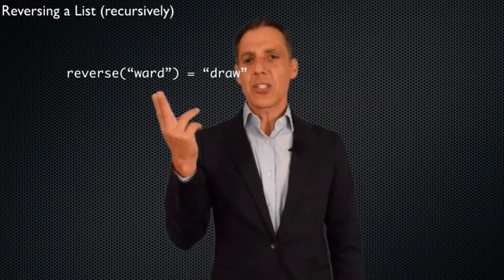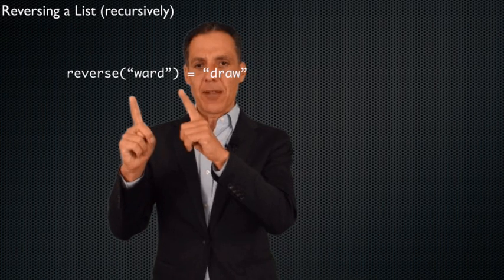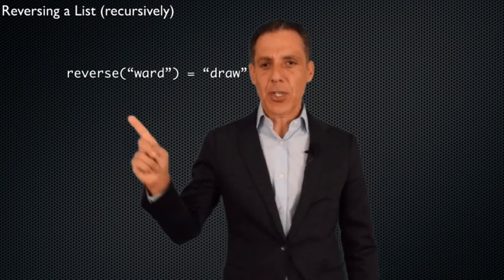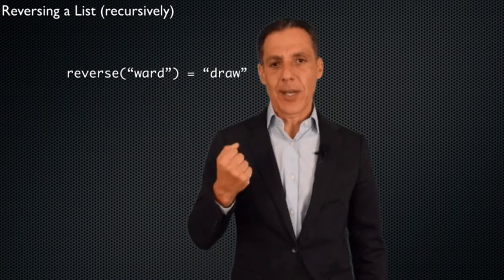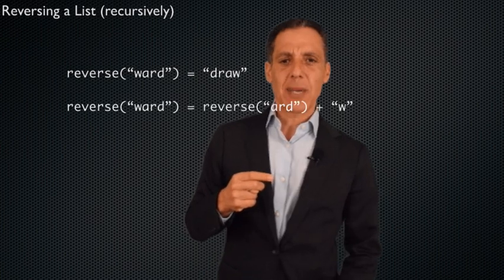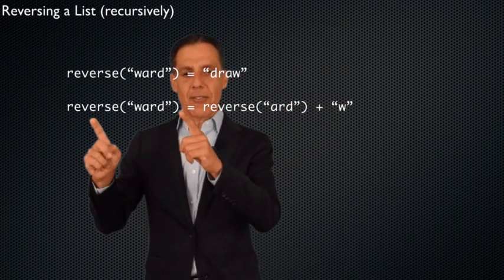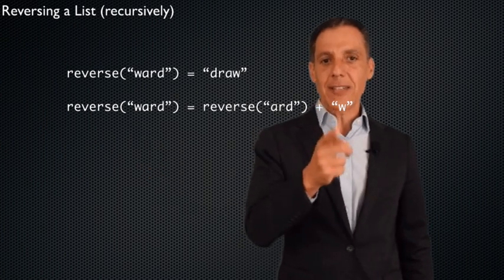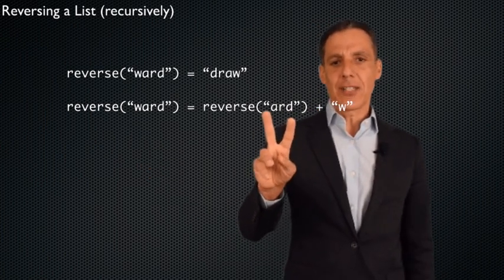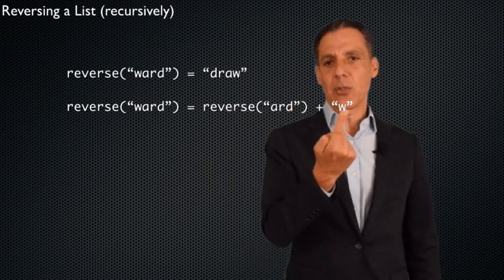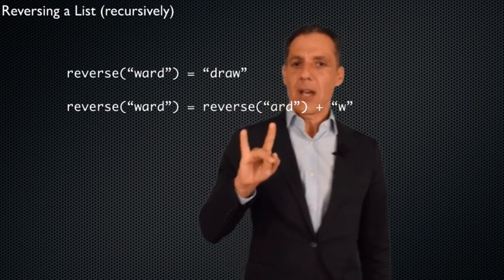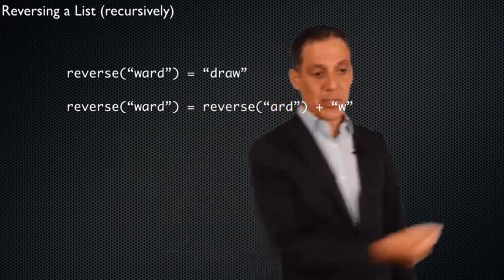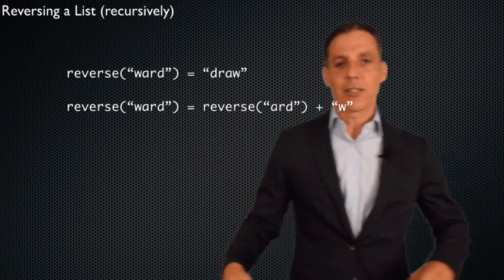So what does it mean to reverse a string? We had been thinking about this as swapping the 'w' and the 'd', then the 'a' and the 'r'. But another way to think about this is: take that 'w' and put it all the way at the end, and then reverse the rest of the string. Can we agree that the reverse of 'ward' is the reverse of everything but the first letter, concatenated with the first letter? If I reverse 'ard', I get 'd-r-a', and then I attach a 'w' to it — and that's the reversal. That's a recursive definition.